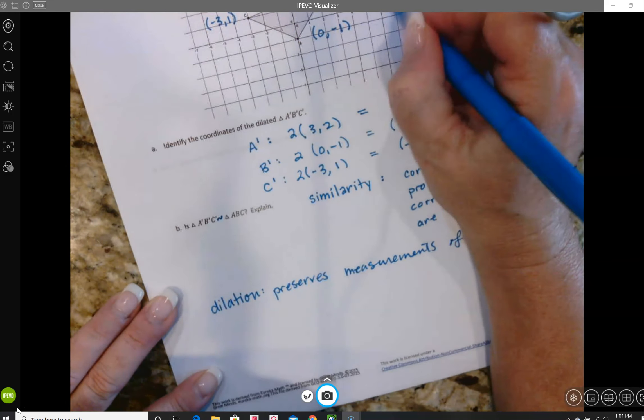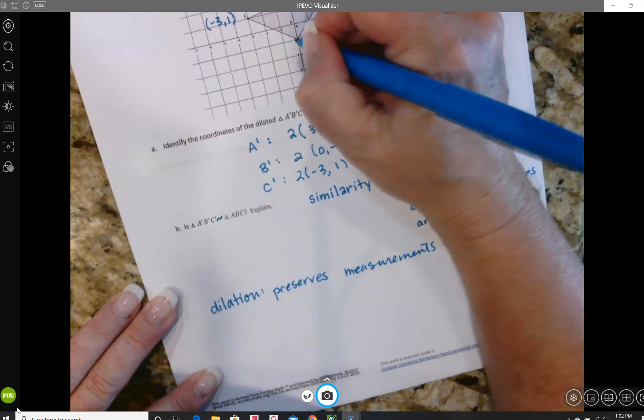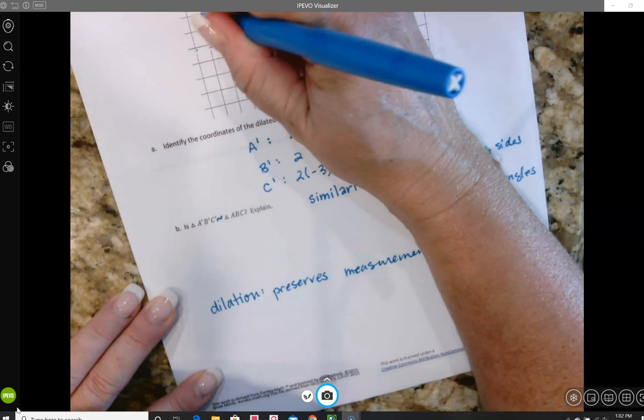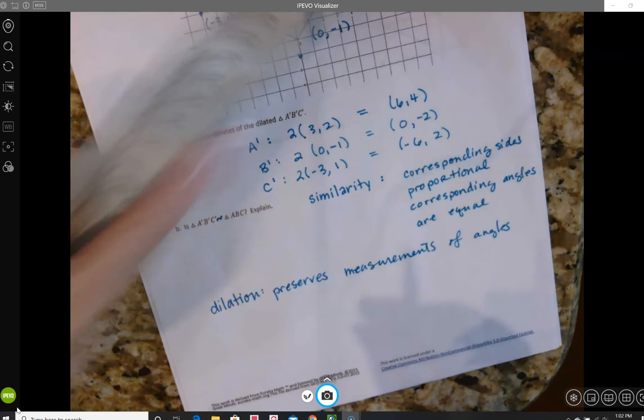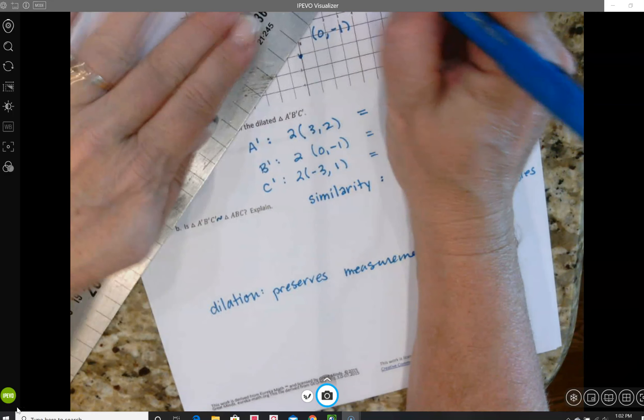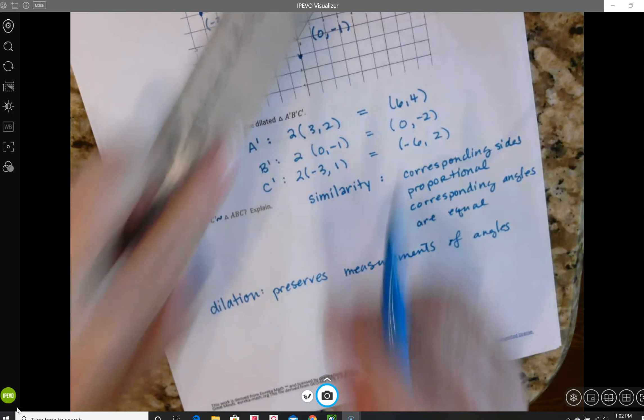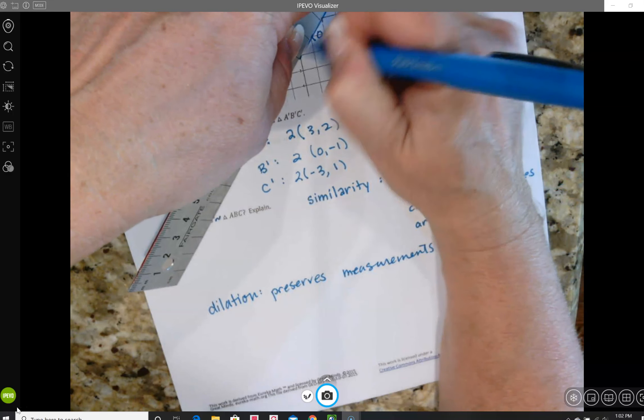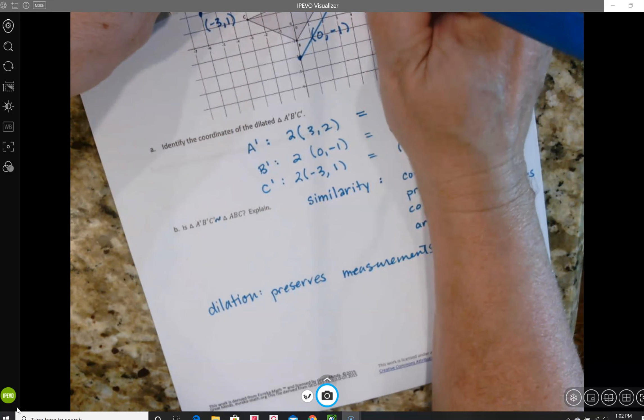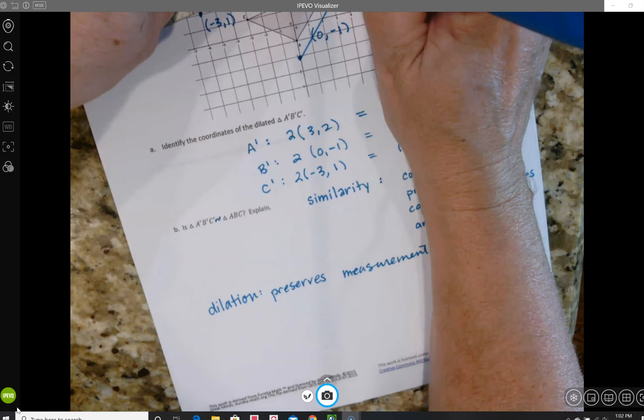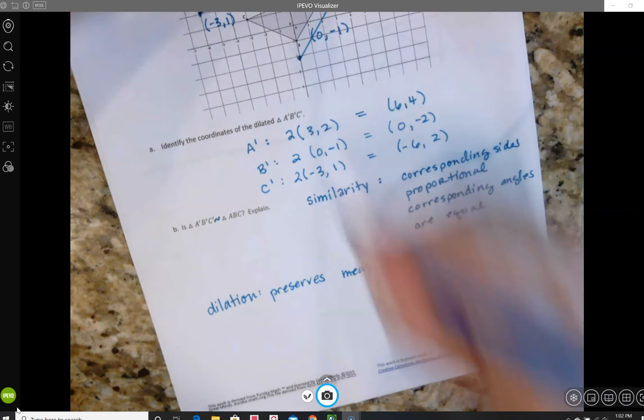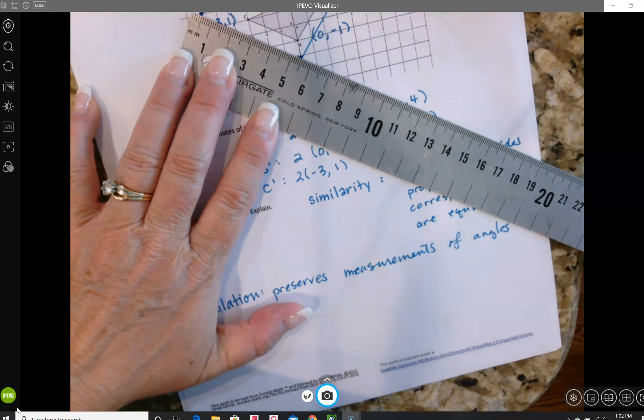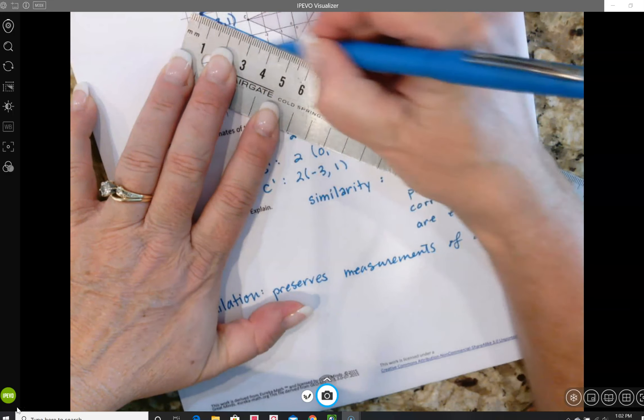Let me go ahead and graph this. I'll go to 6 comma 4, 0 comma negative 2, and negative 6 comma 2, and get my ruler out and sketch that triangle. You'll be able to see that it's the same shape, and that the sides are just longer.